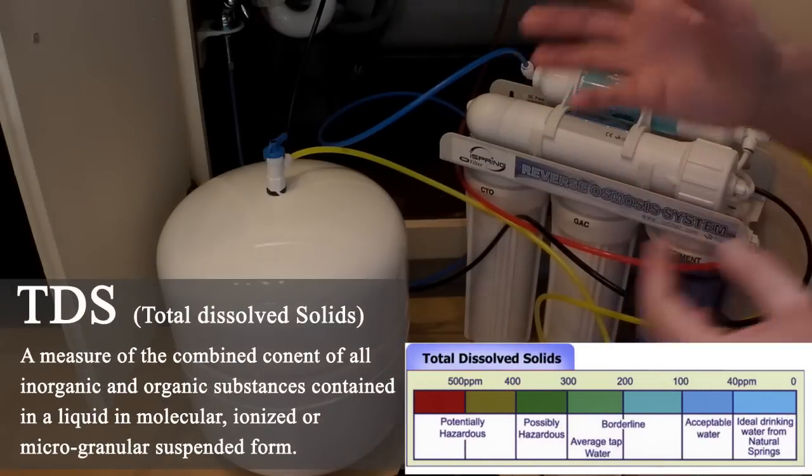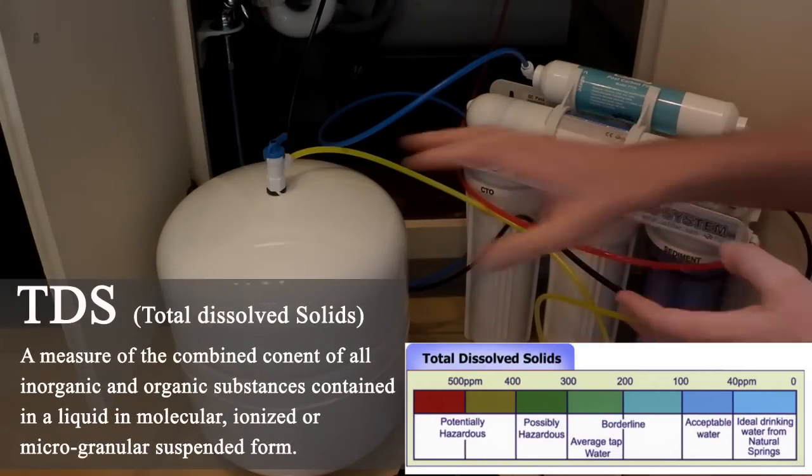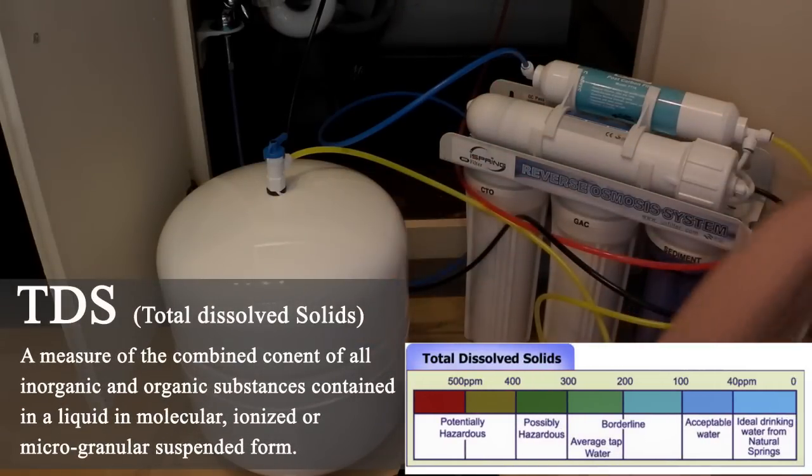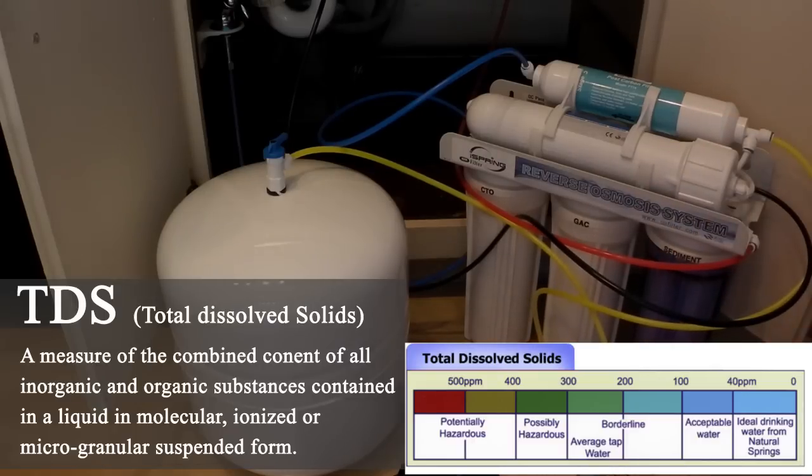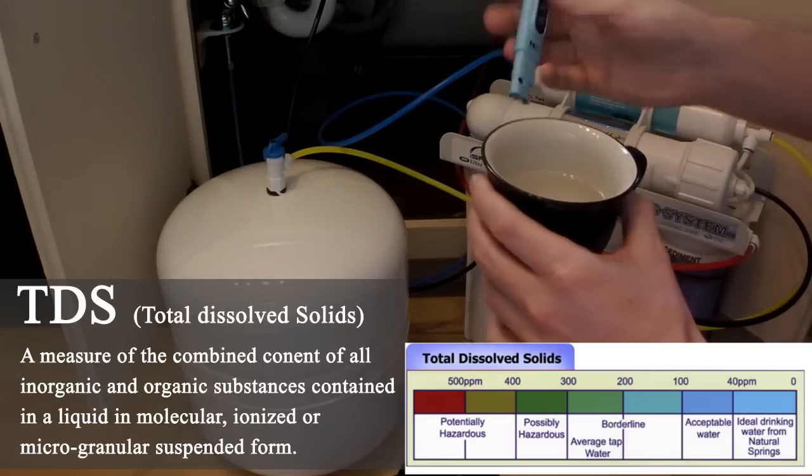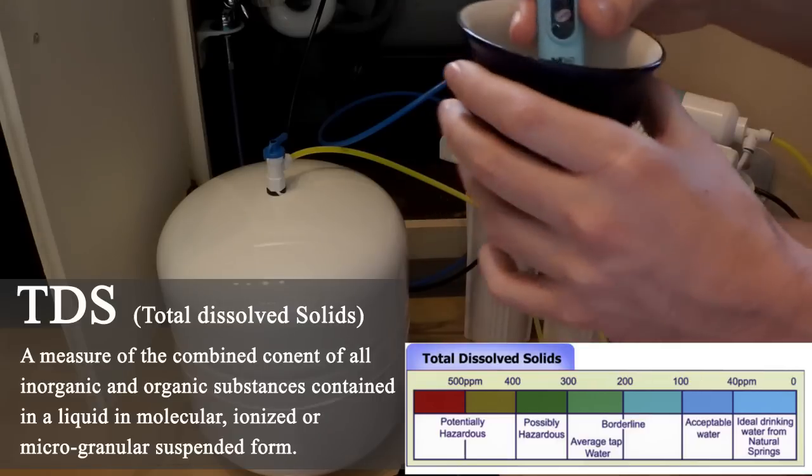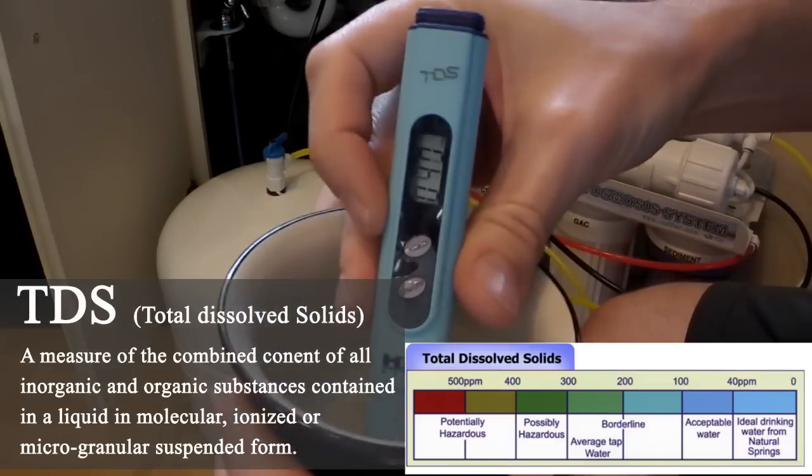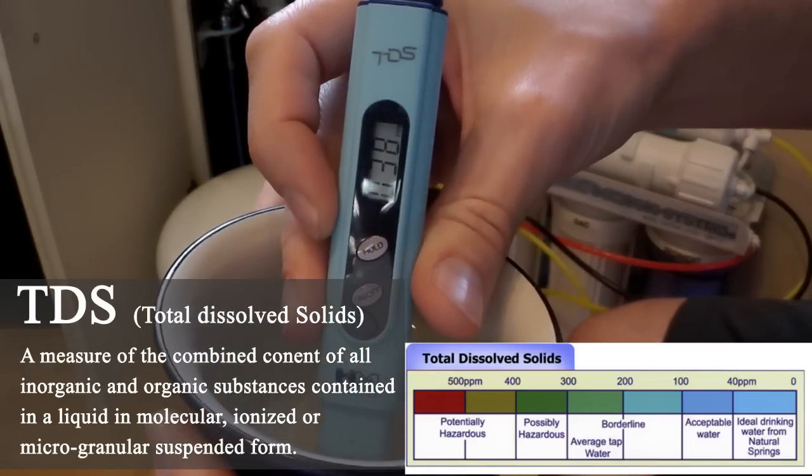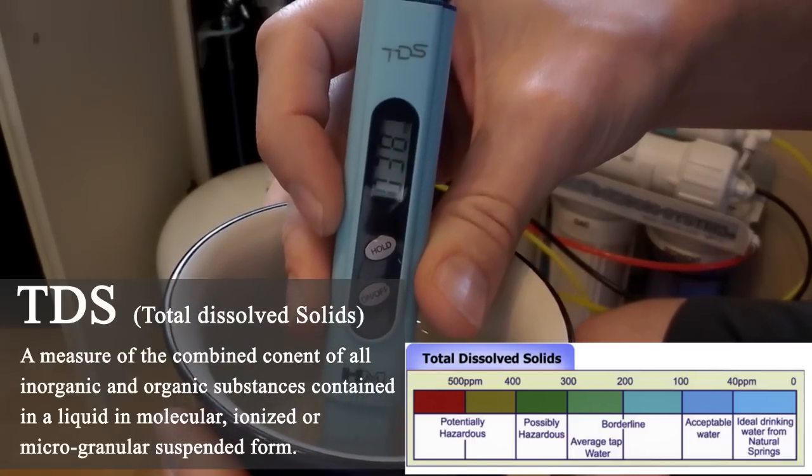First of all, I'll go ahead and test the difference between tap water and what this thing can produce. I actually have two cups of water. This is from the reverse osmosis system. As you can see, the total parts per million is only around 38.